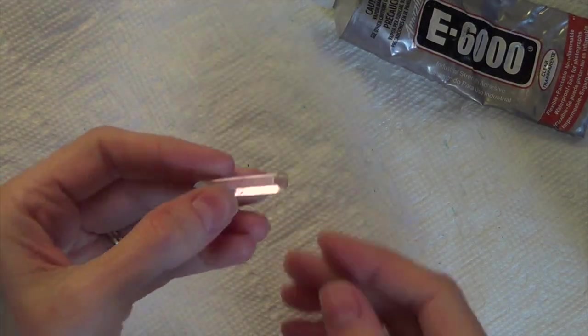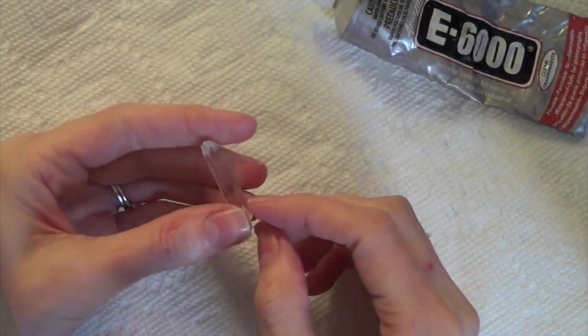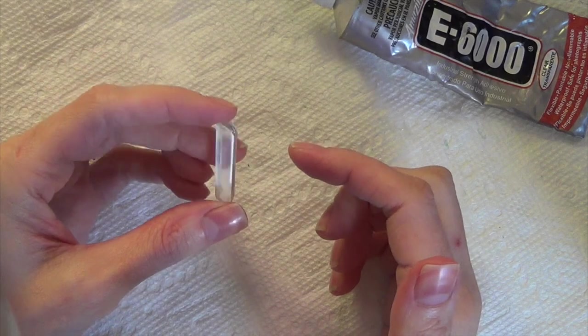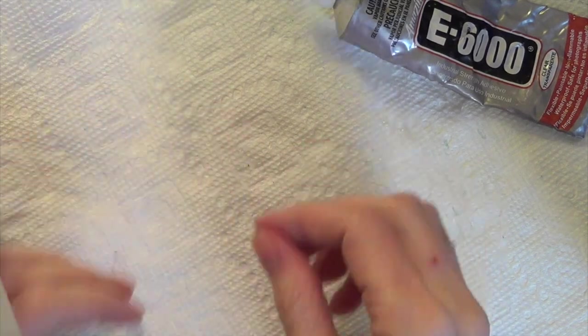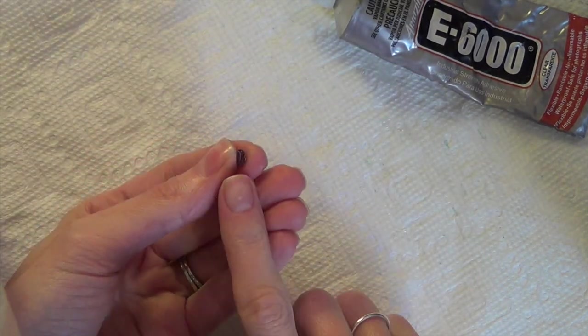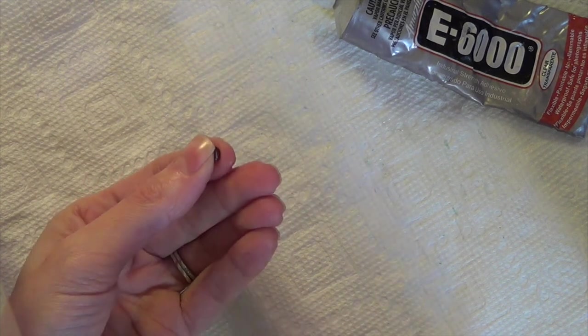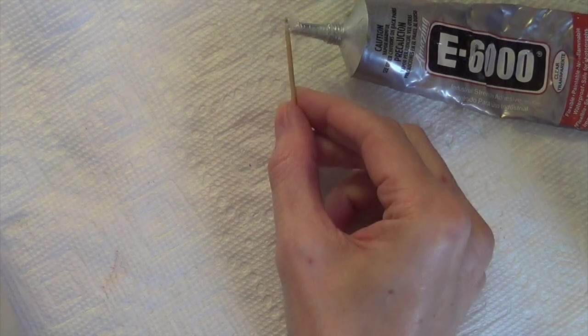I'll try to put some more information about supplies in the description below the video. Before you start, you might want to clean off your stones using some rubbing alcohol, just to get rid of any residue or grease from your fingers. Do this with both stones and try not to touch them too much after you've cleaned them—that will really help the glue stick a lot better.